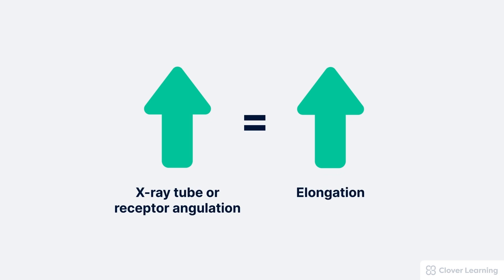Basically, any time that the central beam is out of alignment, it increases the angle of the beam and causes the image of the object to appear stretched out or elongated on the radiograph.